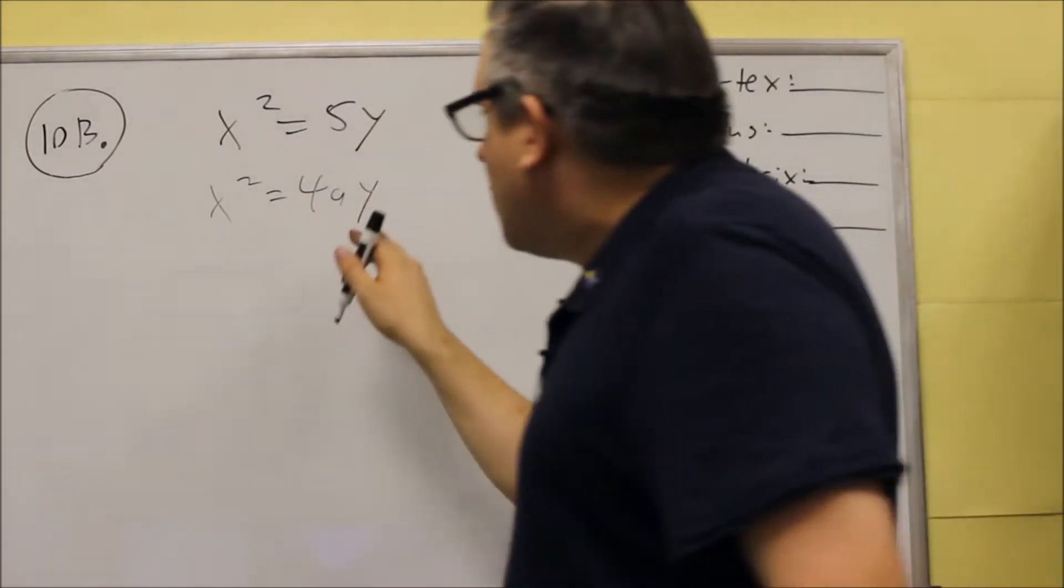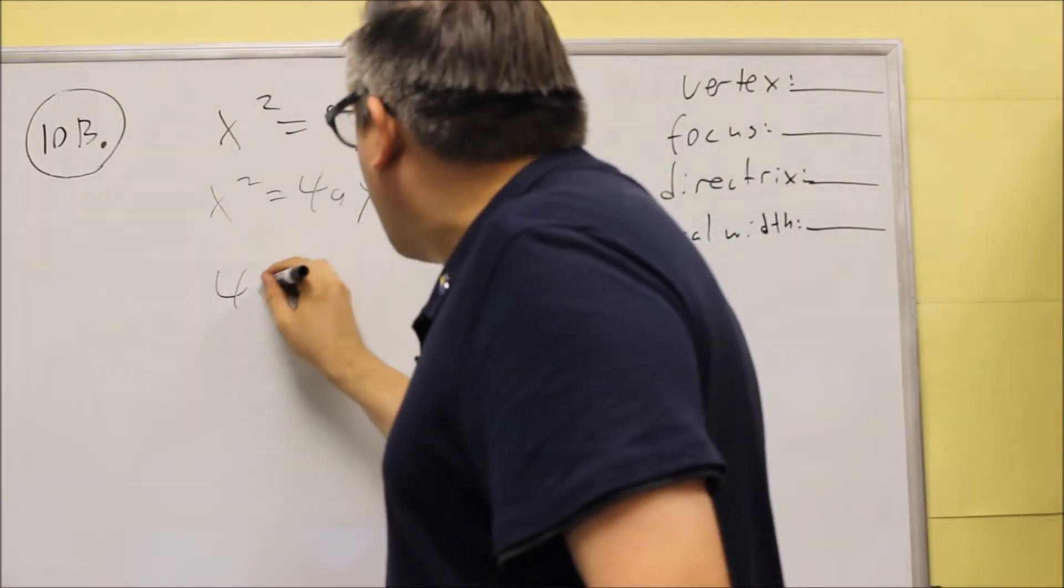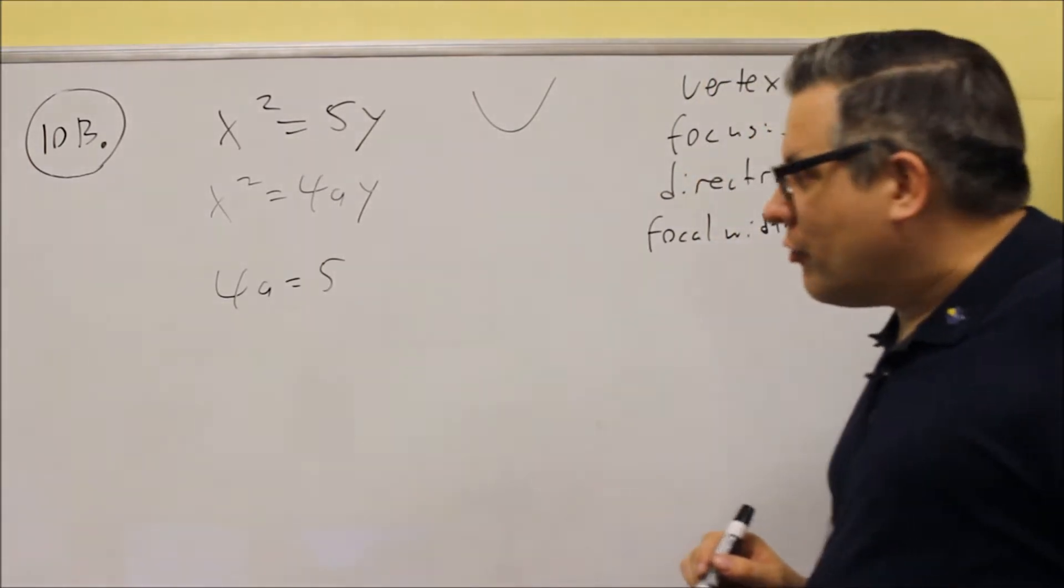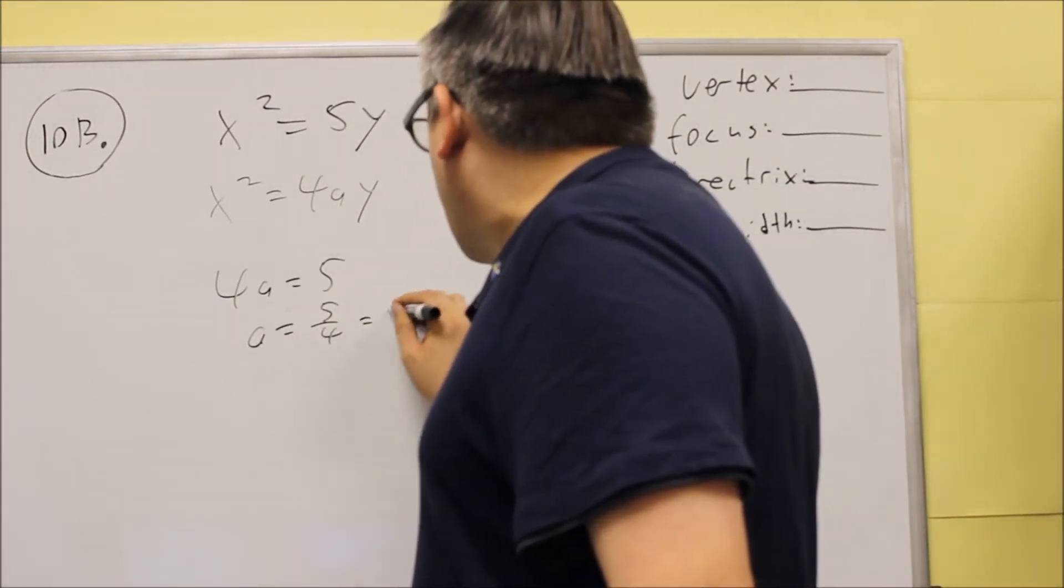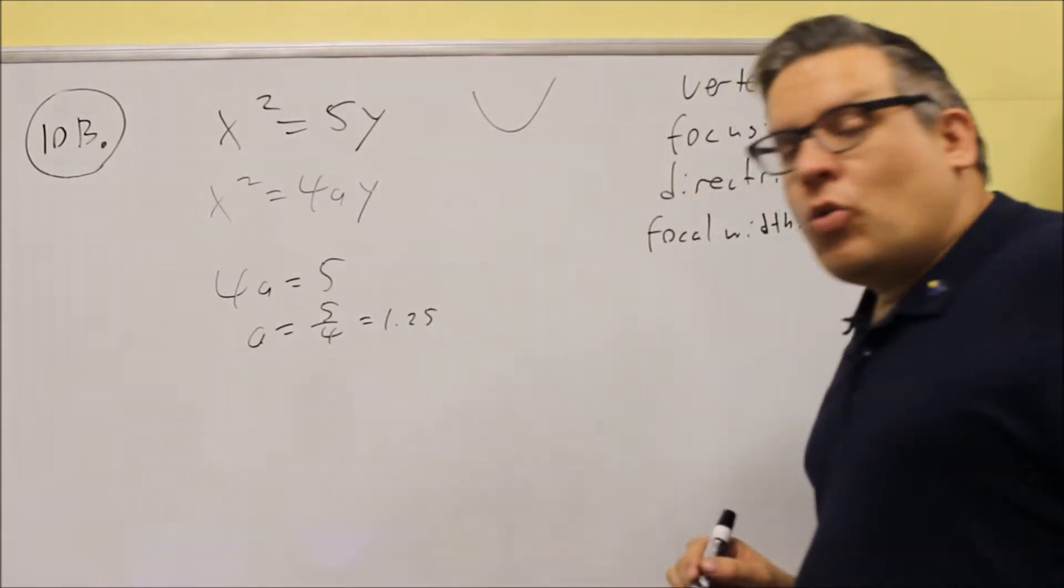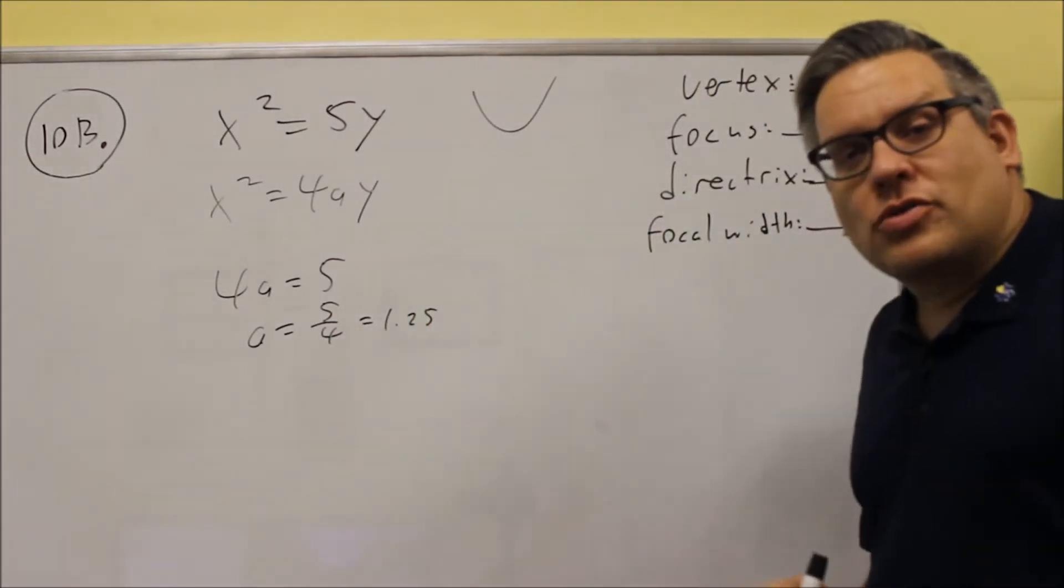Now, because we're matching the models together, 4a is going to be equal to 5, and if we divide both sides by 4, we get 5/4, or if you want to think of it as a decimal, we can do that as well. That would be 1.25.